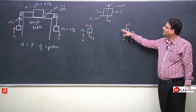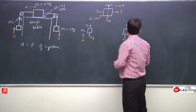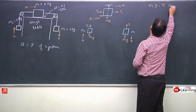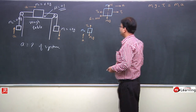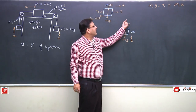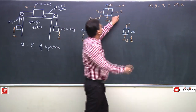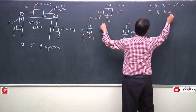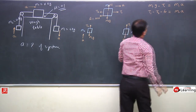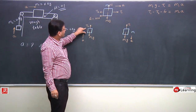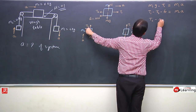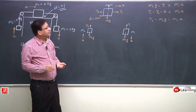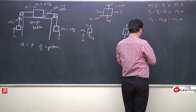Now I make the equations. For M1: M1·g minus T1 equals M1·A — M1·g is the accelerating force, T1 is the opposing force. For M0: T1 minus T2 minus frictional force equals M0·A. For M2: T2 minus M2·g equals M2·A. I will now add these three equations.